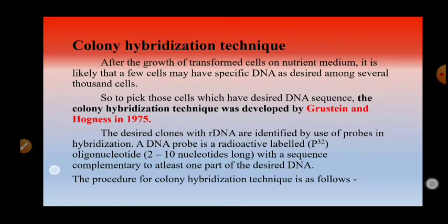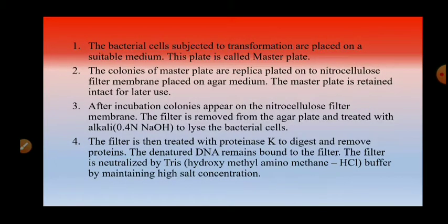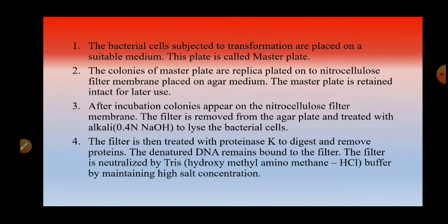The procedure for colony hybridization technique first involves subjecting bacterial cells to transformation and allowing them to grow on a suitable medium. When colonies develop on this plate, the plate is called the master plate. With the help of a replica block tied with velvet cloth, we prepare a replica plate of this master plate.